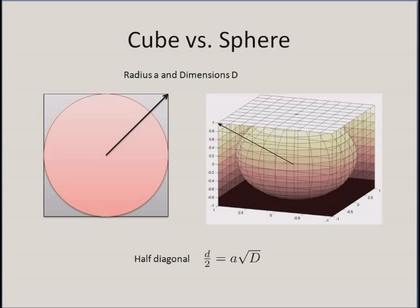Here, the diameter of the circle is equal to the side of the square, and the diameter of the sphere is equal to the side of the cube. Basically, the observation is: the radius a, and the relation between the half diagonal of the square or the cube and the radius of the circle or sphere is given by d/2 = a times sqrt(d). For example, in the two-dimensional case it is a*sqrt(2), and in the three-dimensional case it is a*sqrt(3).